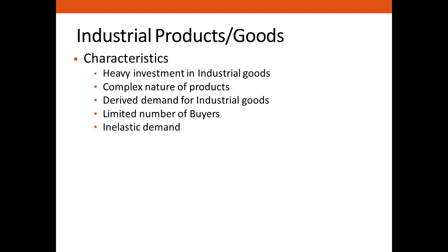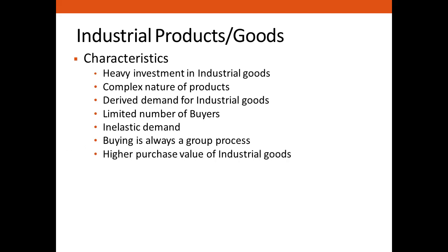The fifth characteristic is inelastic demand — the demand for industrial goods is relatively inelastic and not affected by changes in price. Sixth, buying is always a group process — while a consumer good purchase can be made by an individual, in the case of industrial goods a group or team is involved, consisting of engineers, financial experts and others. Seventh, industrial goods have a higher purchase value, and each purchase involves a very high amount.